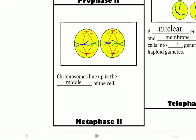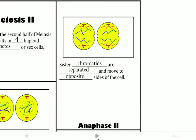Then we move into metaphase 2. In metaphase 2, the chromosomes line up in the middle of the cell — this is very similar to mitosis, it looks pretty much the same — except now you're dealing with two cells instead of just one. The spindle fibers attach and push them to the middle. Then in anaphase 2, the chromosome is broken right in the middle and pulled to opposite sides, so you get a V-shape of just one chromatid moving to each side. The only real difference from anaphase in mitosis is that we're working with two cells instead of one.